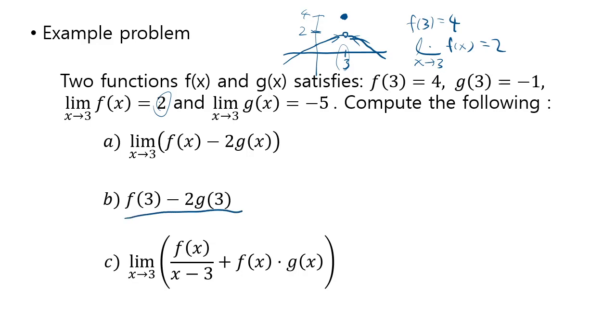So for example in part b here, you should be using the value of the function because it's evaluated at 3. So in that case it should be 4 minus 2 times negative 1, which is 6. But on the other hand, this function f and g of x has the behavior that as x gets closer and closer to 3, this value gets closer and closer to 2, whereas g of x gets closer and closer to negative 5. So you have, that's minus 2 times this. So it's 2 minus 2 times negative 5. So that's going to be 2 plus 10, which is 12.